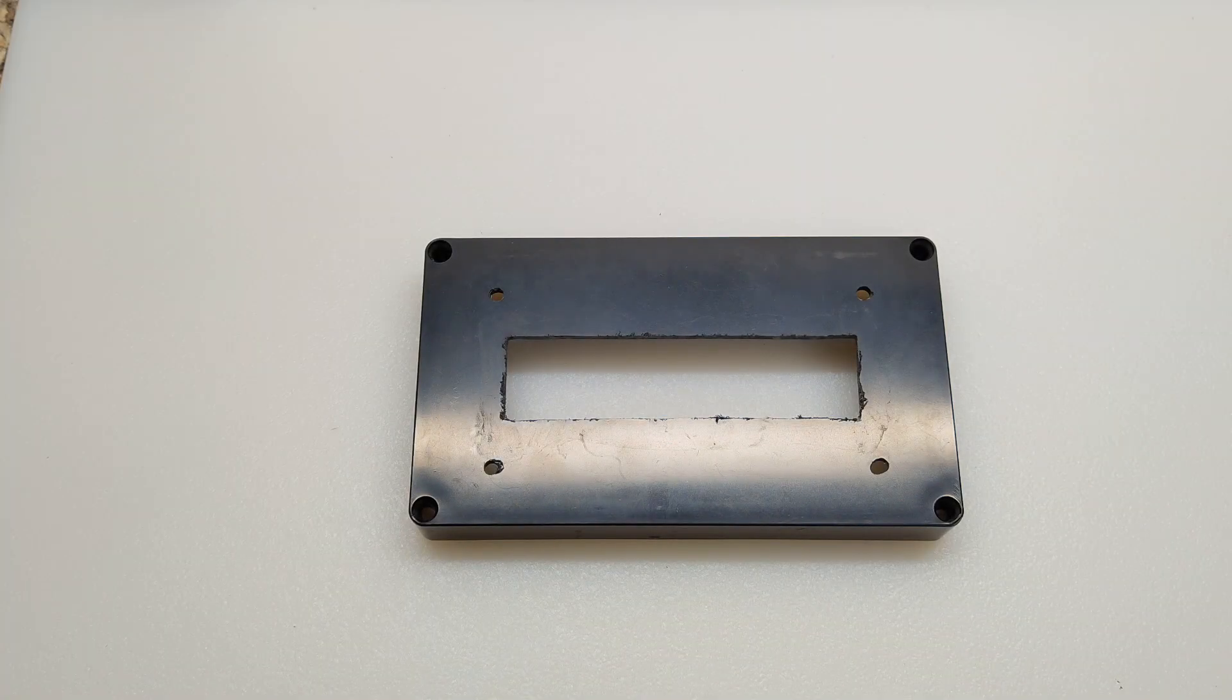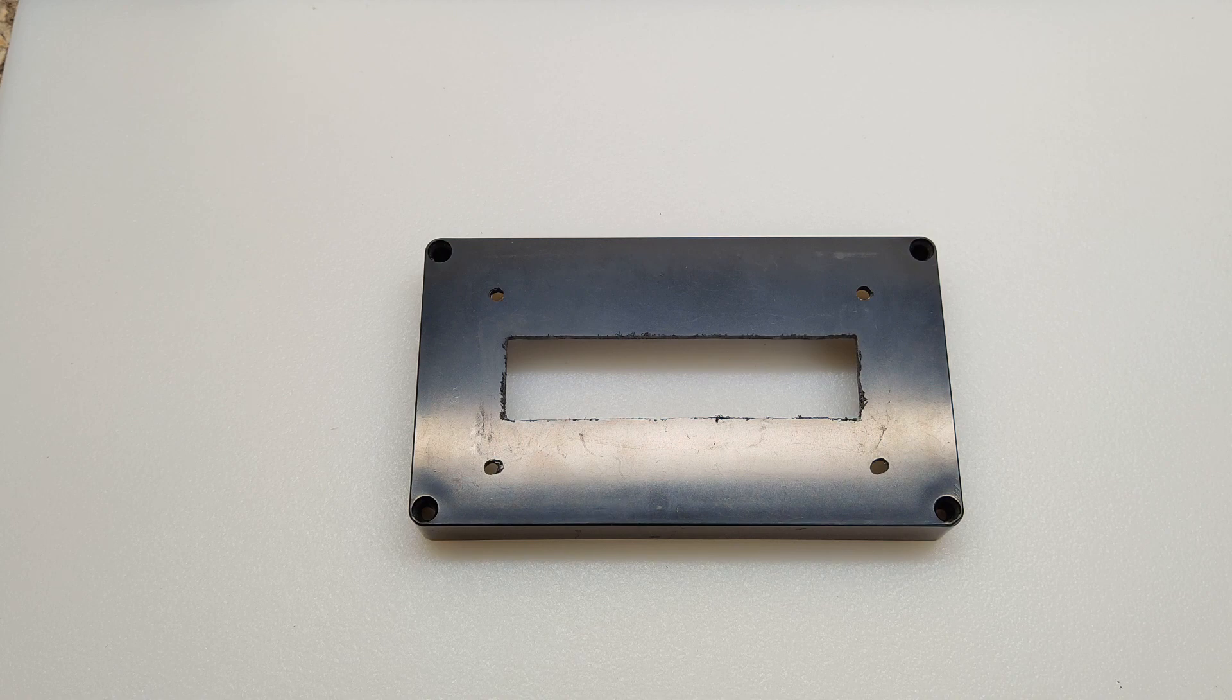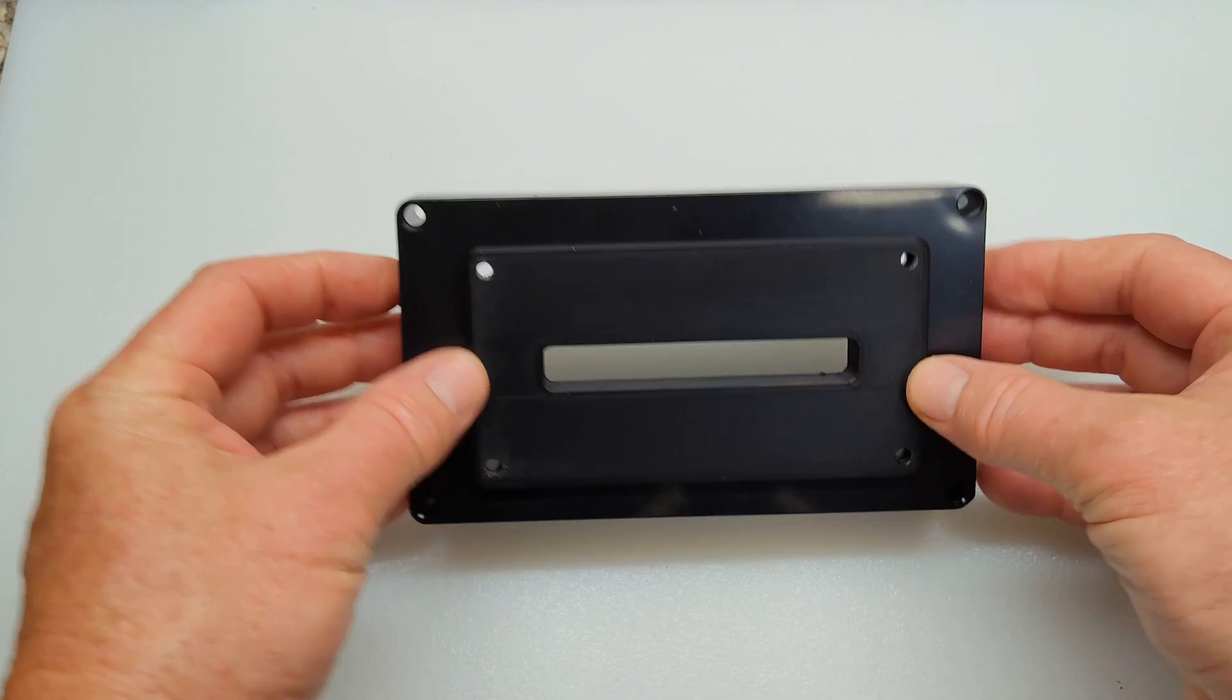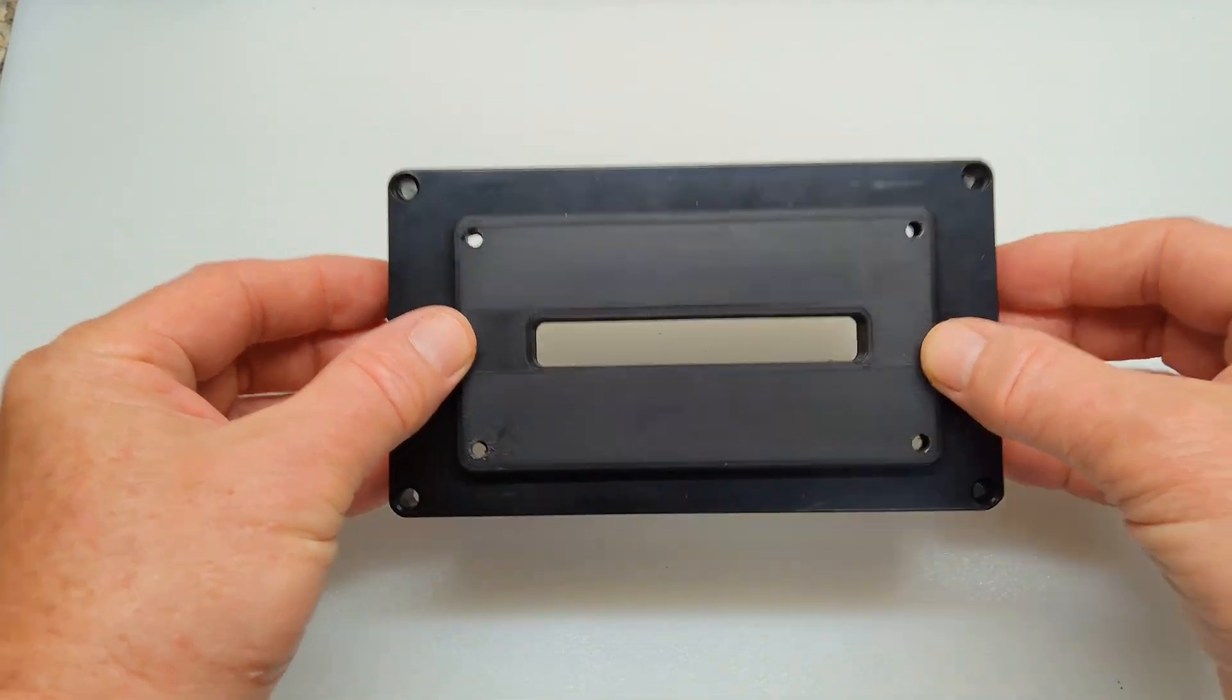This is a view of the top of the box. I've already cut out my 1 by 4 inch rectangle and drilled out the four corners for this bezel. And what I did, I just lined it up in there and then drilled the hole straight through.